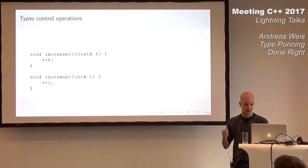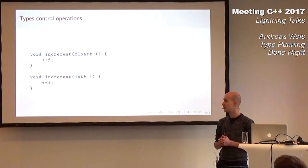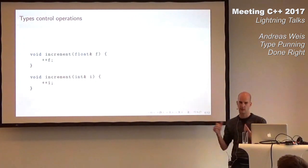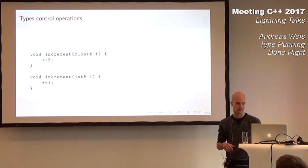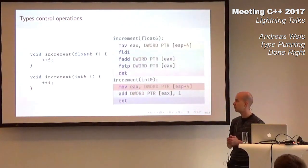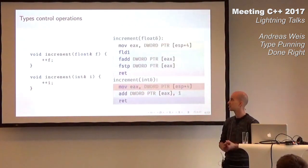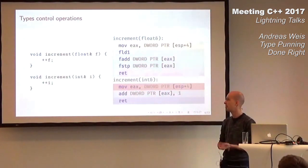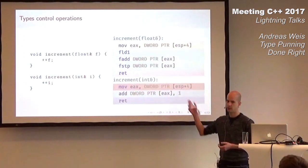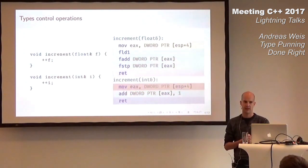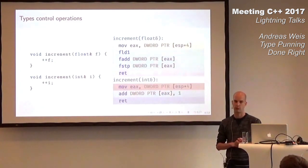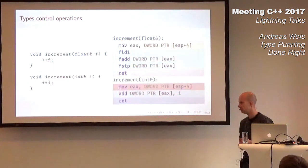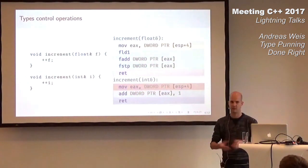I actually have a small example for that. Let's say you have two simple functions — they both do plus-plus on the argument, but in one case the argument is a float and in the other case the argument is an int. Then the code that gets generated for those two, even though the code looks very similar, is actually quite different: in one case we're doing a floating point addition with the fadd instruction, and in the other case we're doing a simple integer addition with the normal add opcode. So you might ask, why would I ever want to do an integer addition on a floating point number?